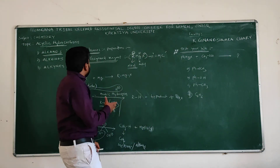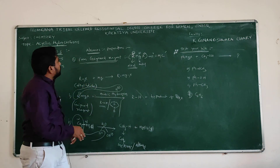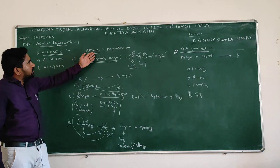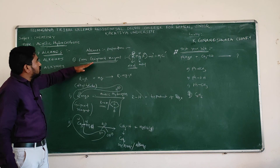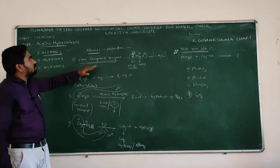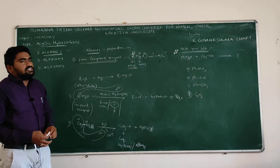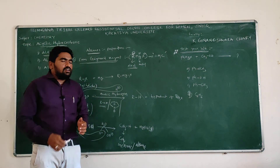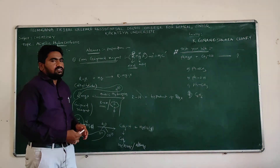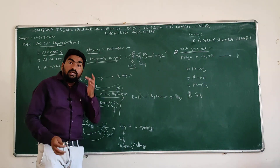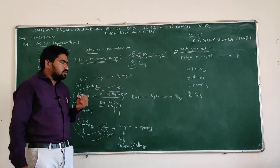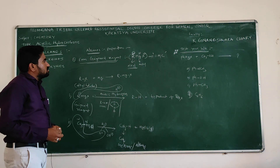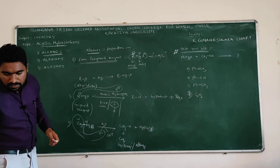After that, next method for preparation of alkanes: the first method — from Grignard reagent — is completed, and the second method is Kolbe's electrolysis. Next we are going to discuss about Kolbe's electrolysis.